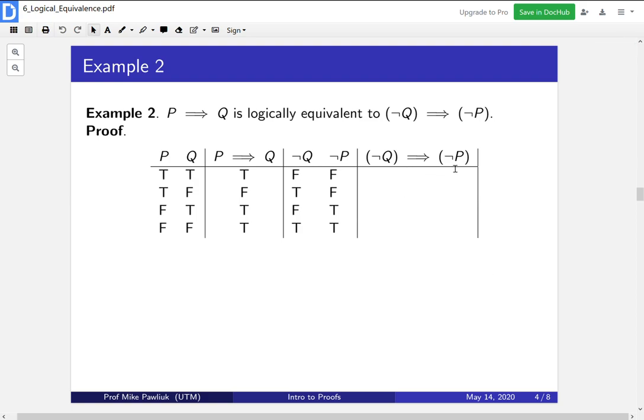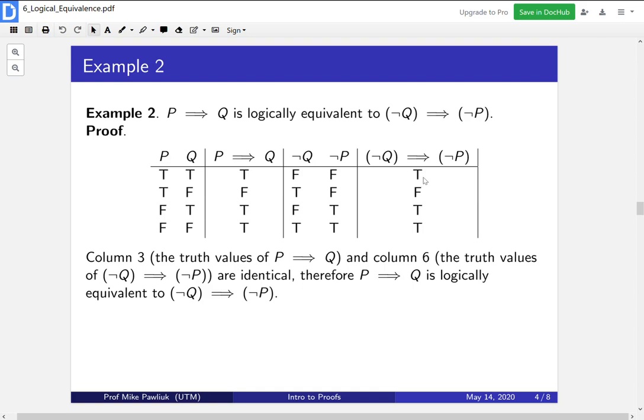And now we go through the implication. This one's a little more finicky, because for each of them we have to think, does false implies false, what does that give us? True implies false, what does that give us? We have to go through all of them. Well the only weird one is when we have true implies false. So true implies false gives us false. And then all the other ones will be true.